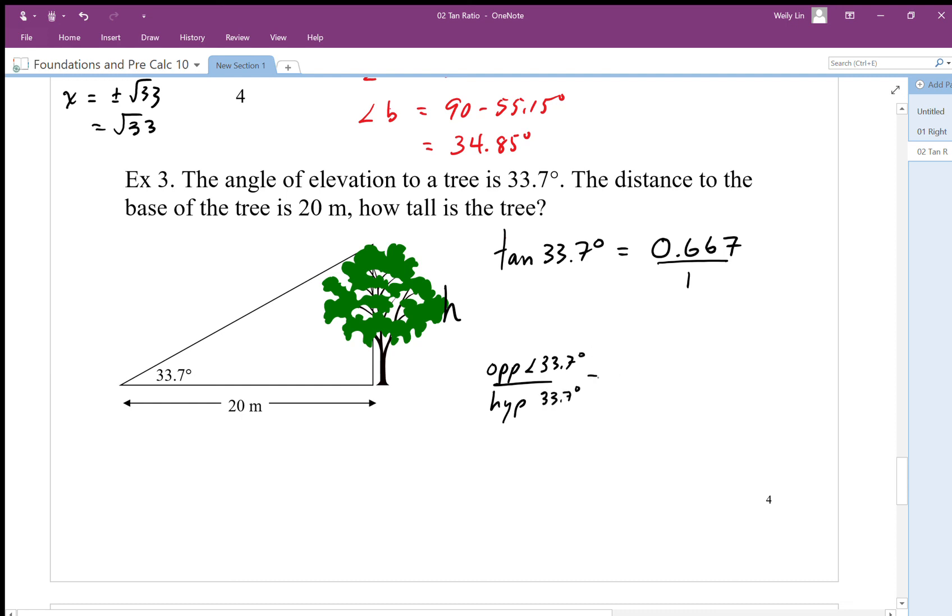My tan ratio is going to be the opposite over hypotenuse. That ratio is going to be my tan ratio and I get 0.667 to one. I know that's my ratio. I'm going to set up an equivalent ratio here, h over 20, rise over run, and then I'm going to solve this equation. So I get the height is equal to 0.667 times 20. I'm just going to cross multiply this.